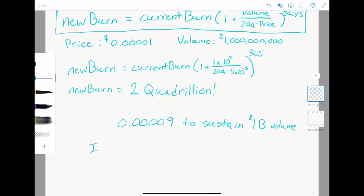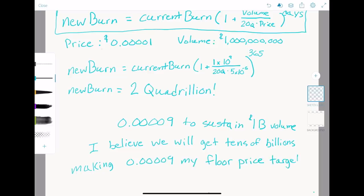If we are going to sustain even one billion dollars of daily volume, our price needs to rise as high as at least $0.000009 or 18x what it is right now. Personally, I believe SafeMoon will see volumes in the tens of billions, and the math says if volume picks up, the price must increase, because it is impossible to burn through quadrillions of tokens when there aren't that many.